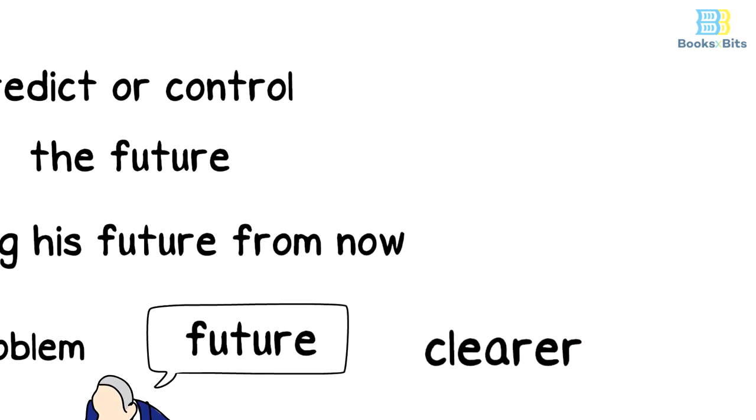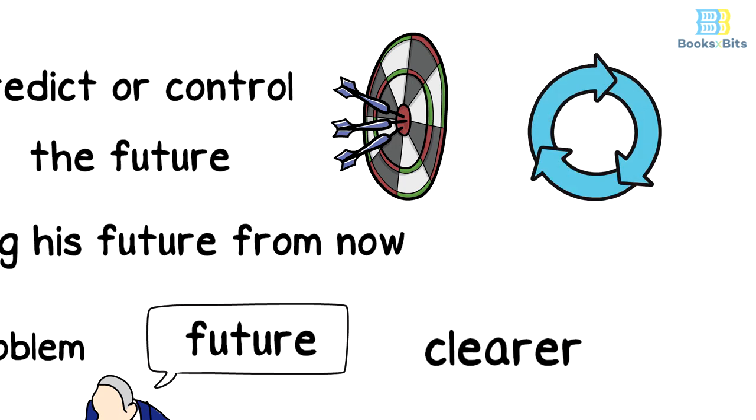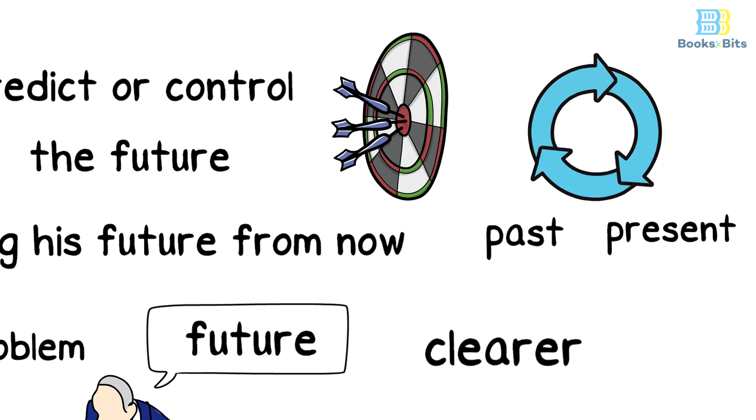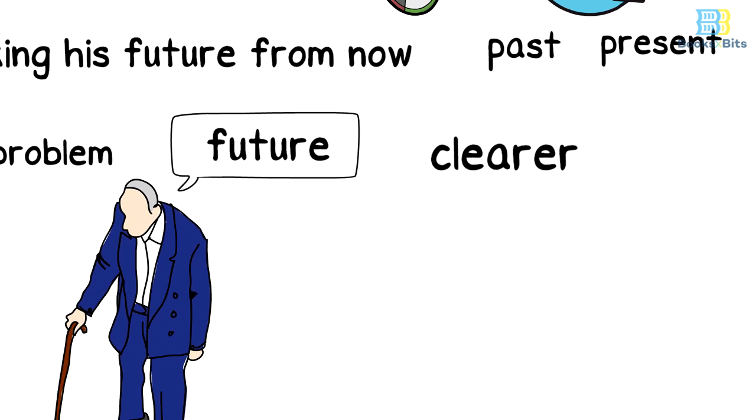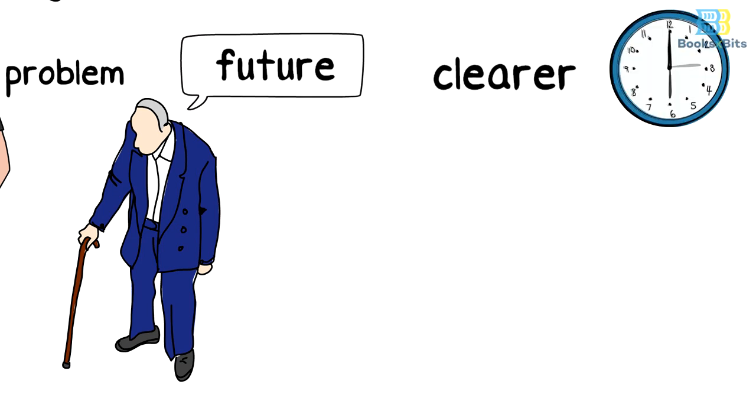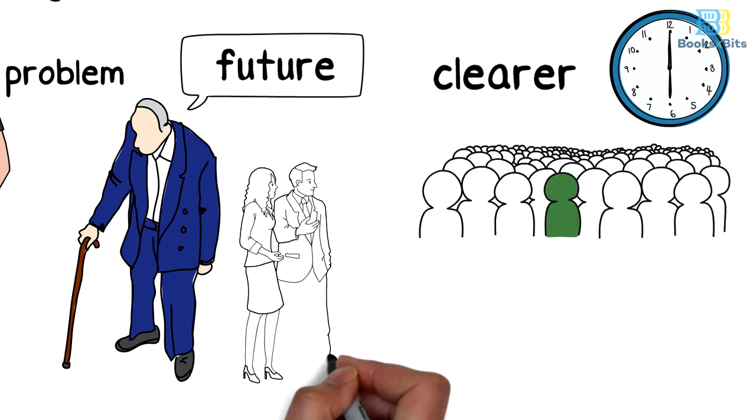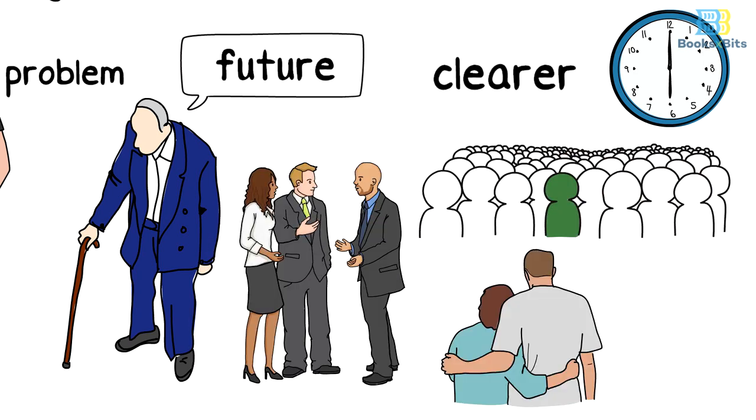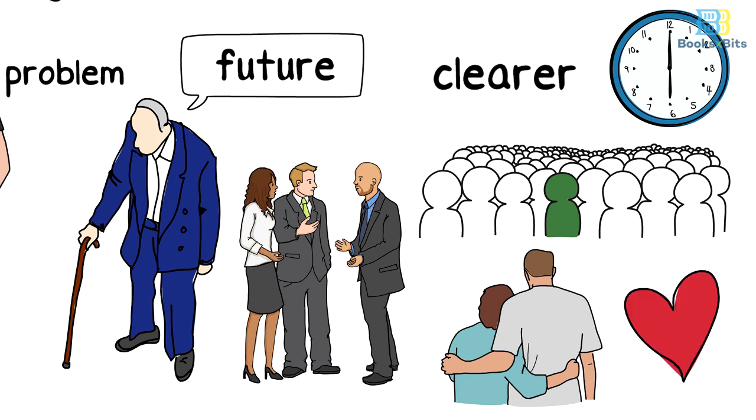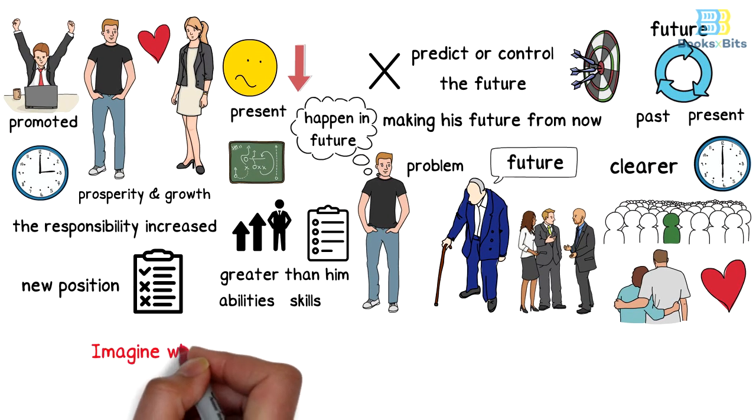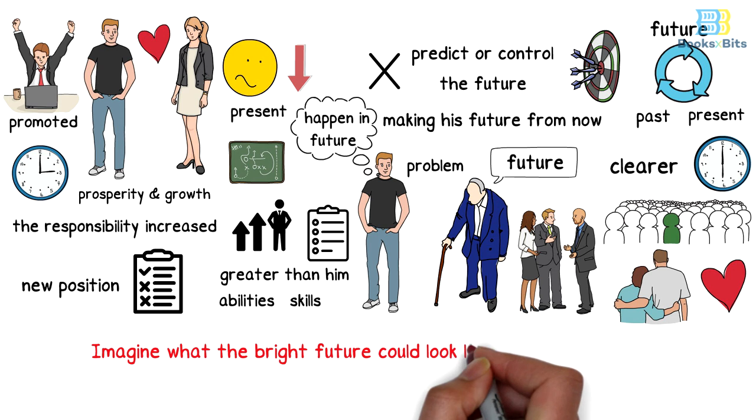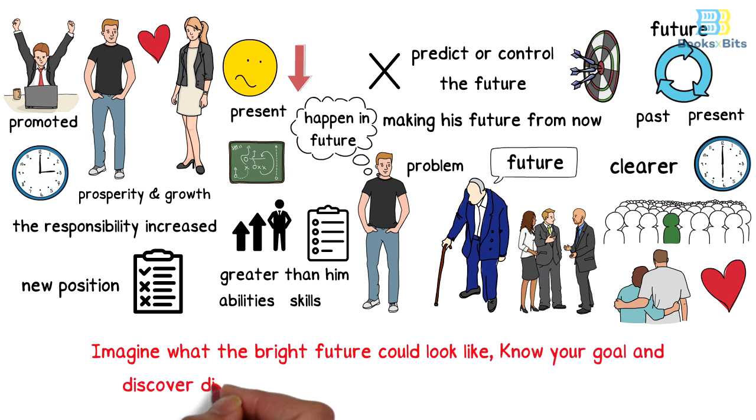Likewise, setting a noble goal is the link between the past, the present and the future. When you live and work in changing times for a noble goal and respond to what's more important today, you become more able to lead, manage, support, befriend and love. But to remember, imagine what the bright future could look like, know your goal and discover different ways to make your life more meaningful.